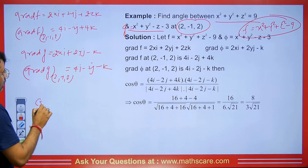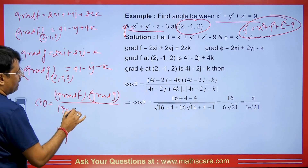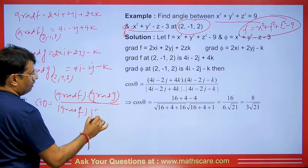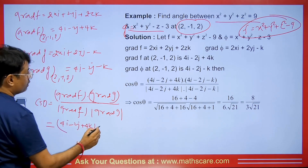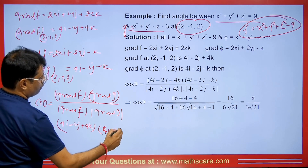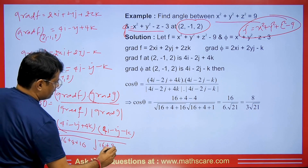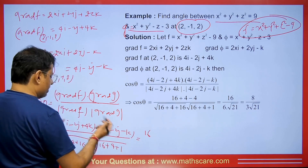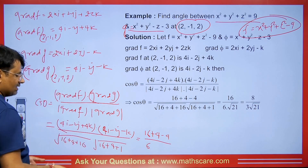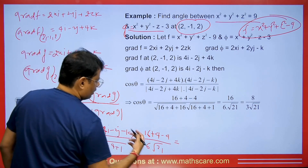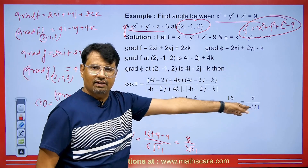Now let's find the angle. cos θ equals (∇f · ∇g) / (|∇f| × |∇g|). Putting in the values: (4i − 2j + 4k) · (4i − 2j − k) divided by the mods. The dot product gives 16 + 4 − 4 = 16. The denominator is root(16 + 4 + 16) times root(16 + 4 + 1), which is root 36 times root 21, giving 6·root 21. Simplifying, we get 8/(3·root 21). Therefore theta equals cos inverse of (8/(3·root 21)).